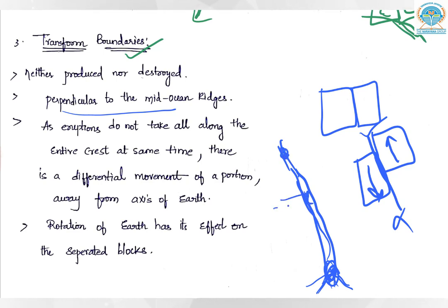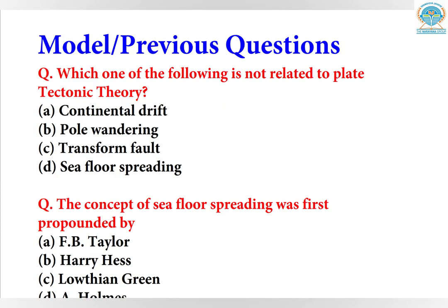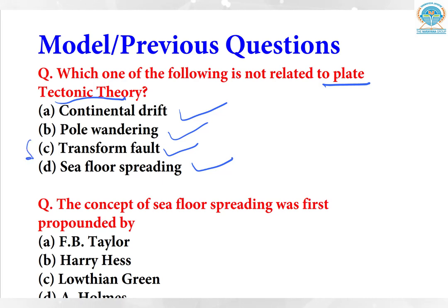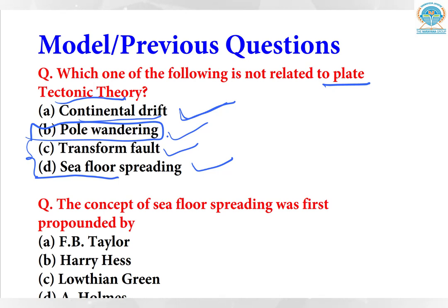Here is a previous year question: which of the following is NOT related to plate tectonic theory? The options are: (A) continental drift theory, (B) pole wandering, (C) transform fault, (D) seafloor spreading theory. Transform fault and seafloor spreading are related to plate movement, and continental drift also involves tectonic plates. Pole wandering happens due to shifting of Earth's magnetic poles, not plate tectonics — so the answer is B.